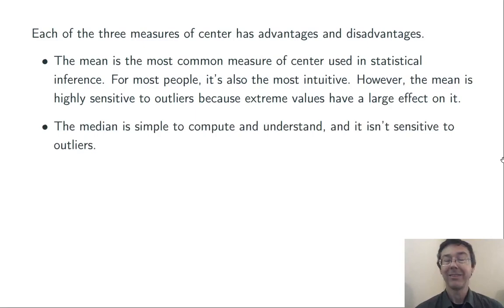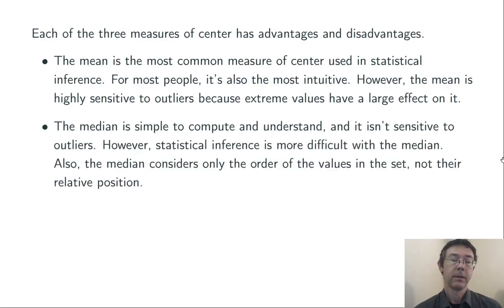The median is nice and simple to compute and to understand, and it's not sensitive to outliers. If you add an outlier to a set, it doesn't change the median usually very much. However, statistical inference is more difficult with the median. We usually don't get to it in introductory statistics. Also, the median only considers the order of the values in the set, not their relative position, so it's not entirely using all the information in the set when computing that measure of center.